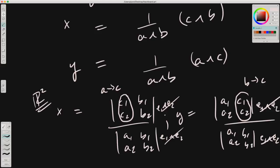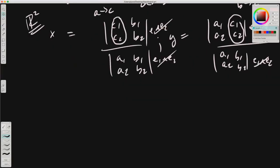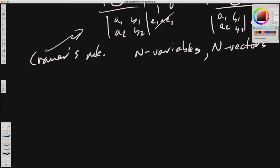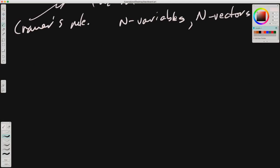Now, in Cramer's rule, you had to solve for n variables with n vectors. This particular wedge product system is not actually restricted in that way. We can see that by showing an example. Let's go through an example using R4, an R4 linear system with two variables.